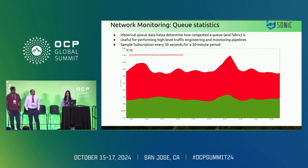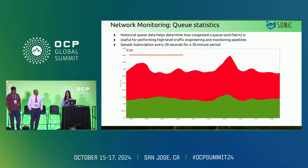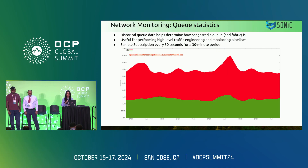We also monitor queue statistics, using the QoS model under interfaces, per-interface and per-queue counters — transmit packets, plotted against two queues AF1 and BE1. This helps us see historical data on how congested a queue is, which informs how congested the traffic can be. It provides a feedback loop to perform high-level traffic engineering, redistribute loads, and monitor trends to improve our networks. This is another sample subscription every 30 seconds over a 30-minute period, which showcases how traffic changes frequently.